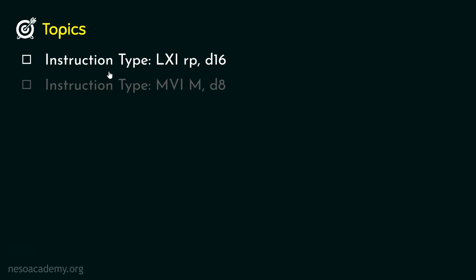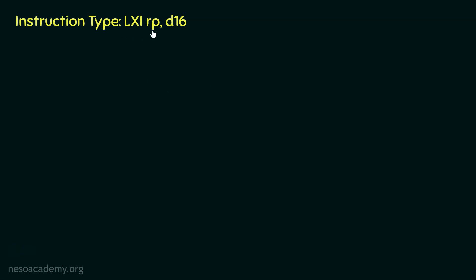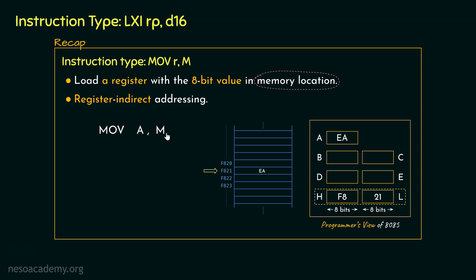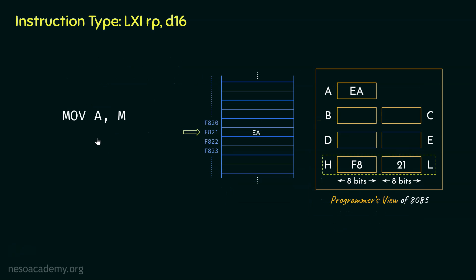Let's begin with the first instruction type, LXI RP,D16. Before we decode this entire instruction type, let me take you back to the previous session. We studied about the instruction type MOV R,M — register indirect addressing. If we wanted to move the data from a particular memory location into the accumulator register, we executed the instruction MOV A,M. But before that, within the HL pair, we had to load the data F821. How can we load the data F821 in the HL register pair?